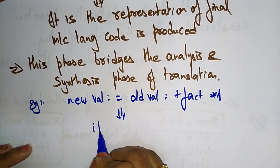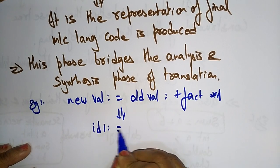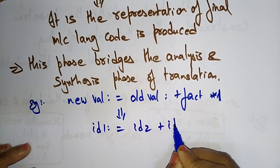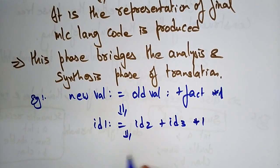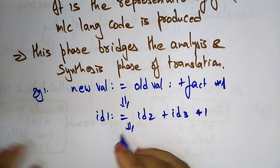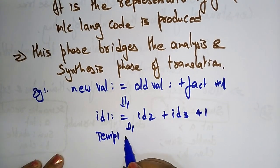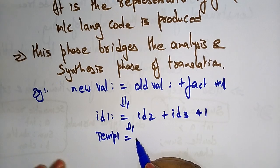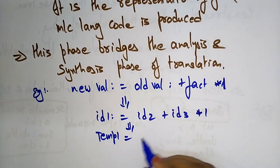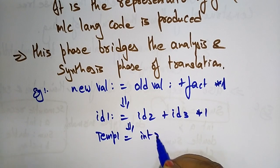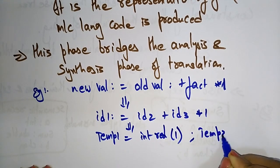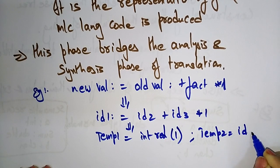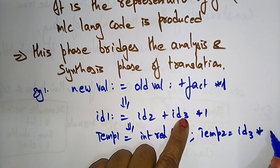Taking ID1 = ID2 + ID3 * 1, the intermediate code generator uses temporary values. temp1 = inttoreal(1), meaning the number 1 is represented as temp1. Then temp2 = ID3 * temp1.